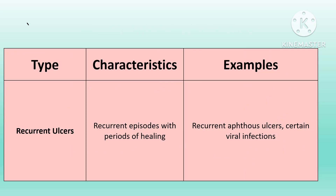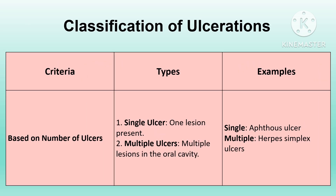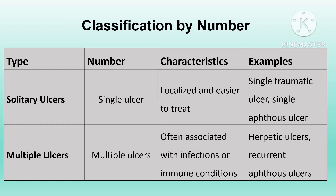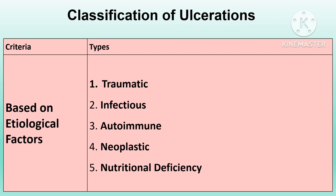Based on number, ulcers may be categorized into solitary ulcers — a single localized ulcer easier to treat, like traumatic or single aphthous ulcers — and multiple ulcers, often associated with infections or immune conditions such as recurrent aphthous ulcers. Single ulcers are often larger, more painful, and associated with trauma or burns, while multiple lesions may indicate conditions like recurrent aphthous stomatitis or viral diseases like HSV, often with a systemic factor.